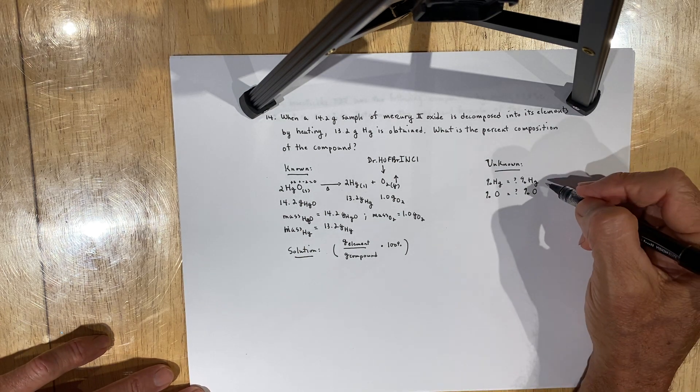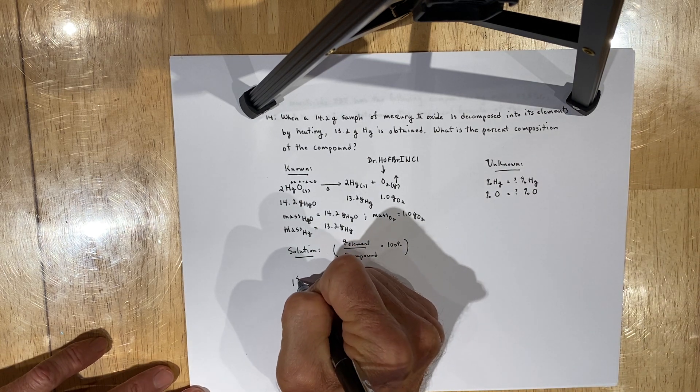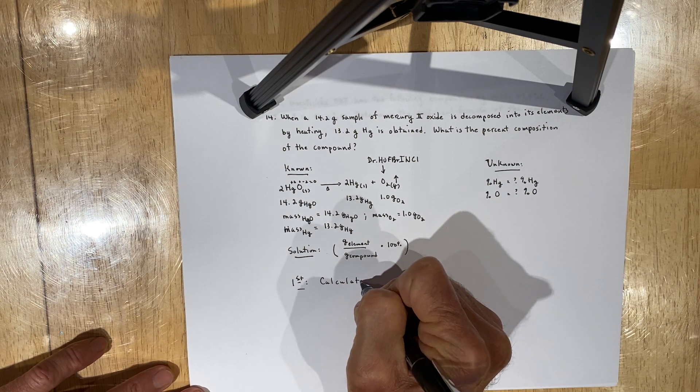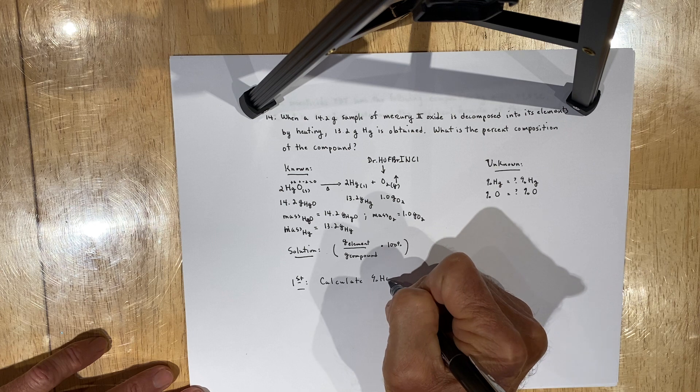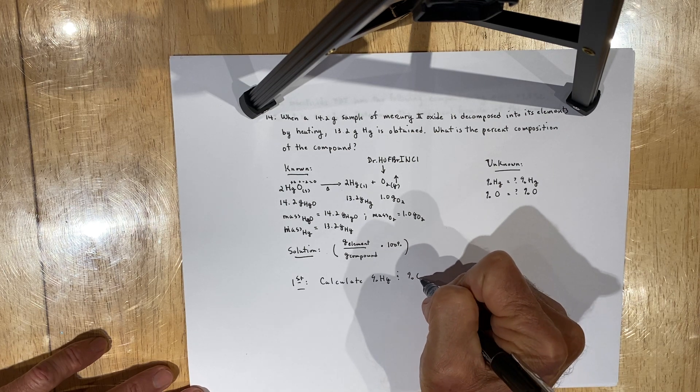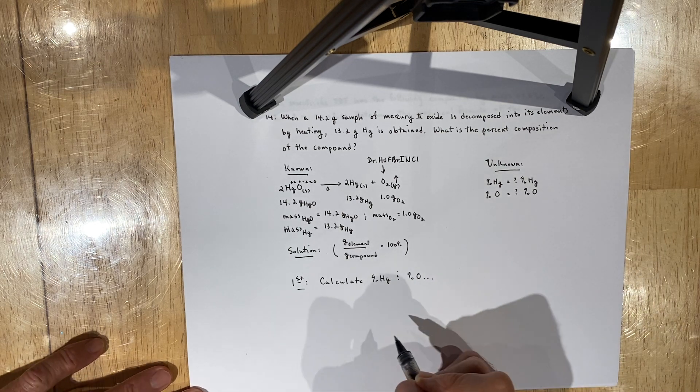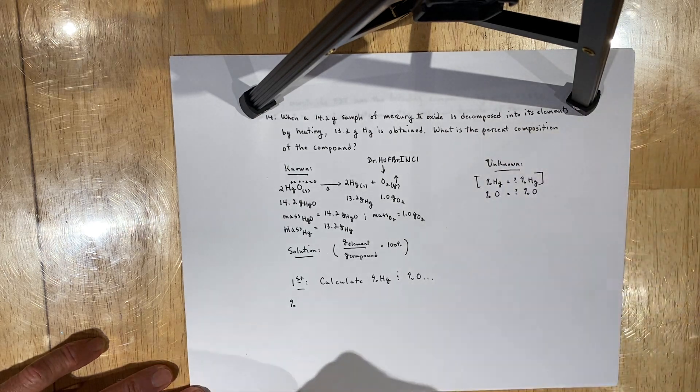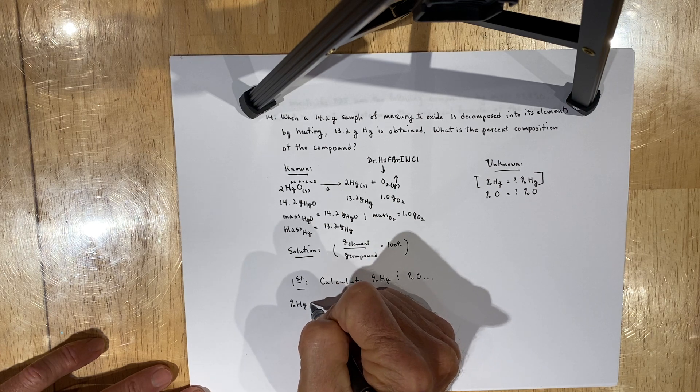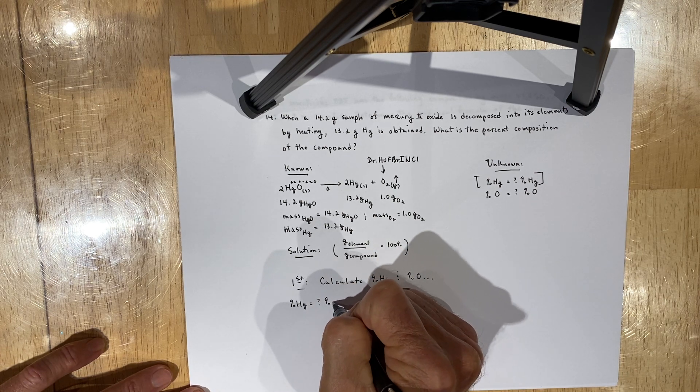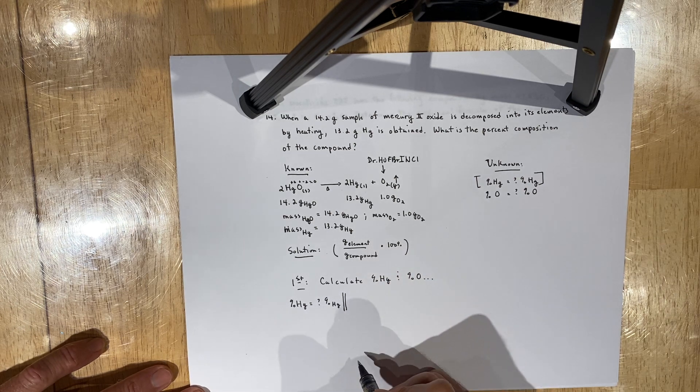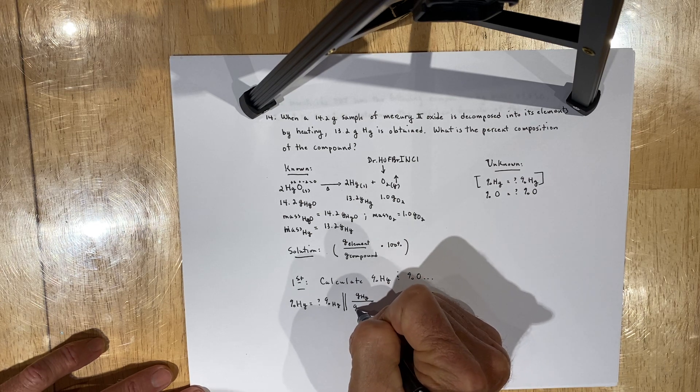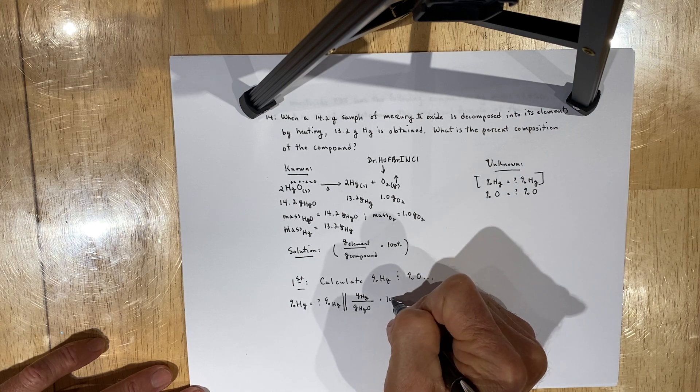So in our solution, we've got two basic calculations to do, and we're going to do them in the same step, essentially, because we need to calculate the percent composition of mercury and the percent composition of oxygen in the compound. To do that, we're going to go ahead and say we're looking for the percent of mercury, which is equal to some value in the percent of mercury.